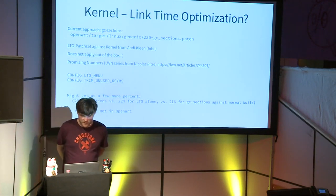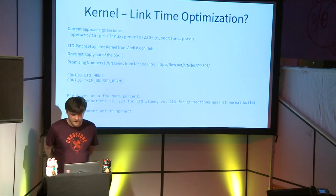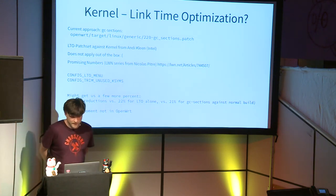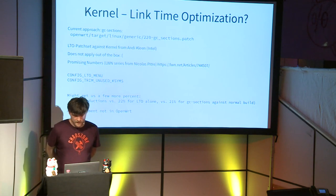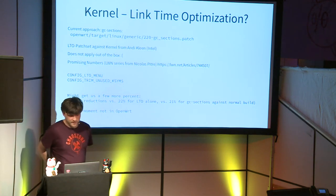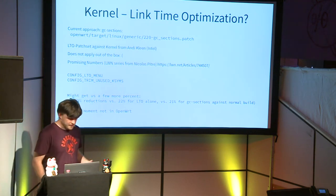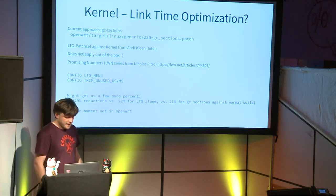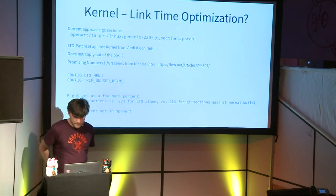I didn't manage to get it working on OpenWRT, but I'm confident it will be possible. If you want to explore this route, there's an article in Linux Weekly News by Nicolas Pitre, and he got good numbers compiling the kernel with link-time optimization. If you get LTO working you can also use it to trim unneeded symbols, getting around 29% reduction versus 21% for GCC sections.